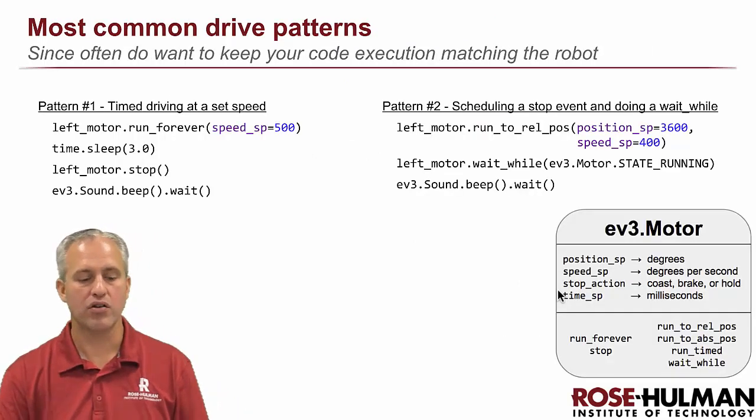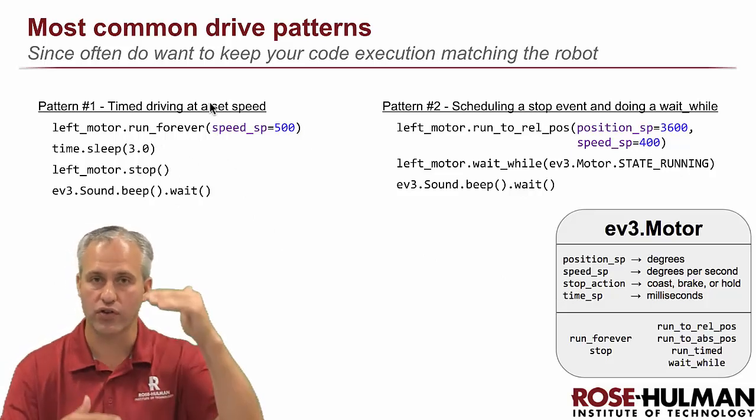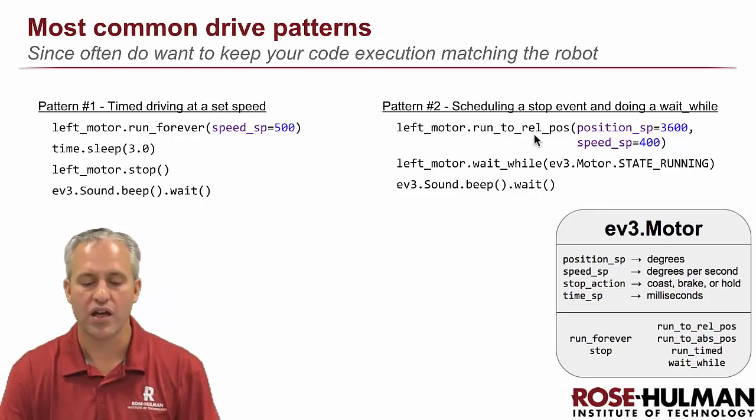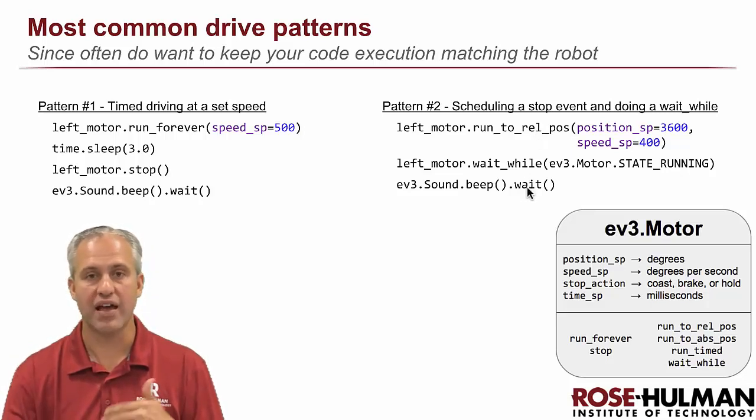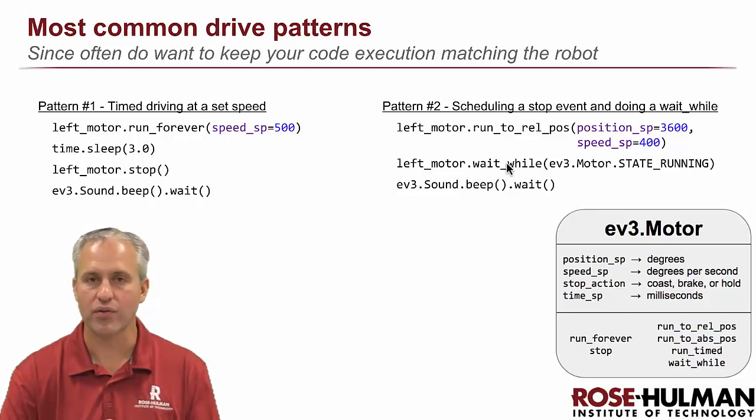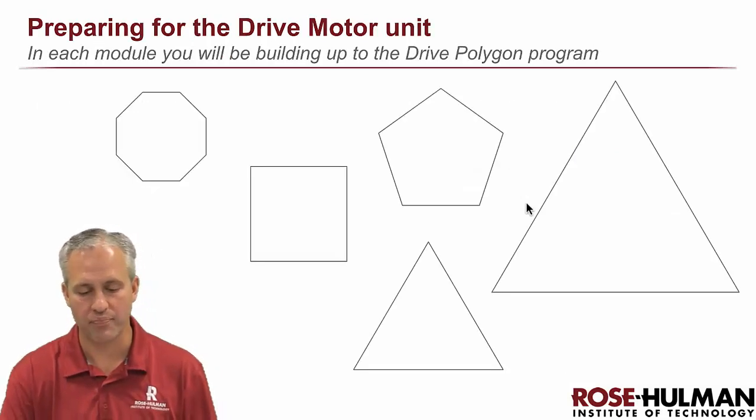In the end, you end up with two patterns. Sometimes you use run forever, time dot sleep, and then stop. And that obviously works for controlling the flow of your code. The other pattern is you use one of the more advanced motor commands, but you typically put in a wait while, and then you do something after the robot's finished. You could simultaneously do things. That's fine. Just be aware that you have to think about it to keep your code in lockstep.